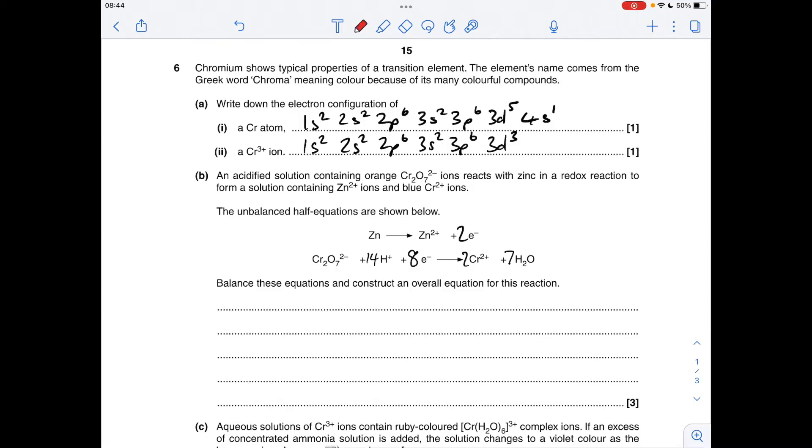So when we combine the two half equations to get the full redox reaction, we need the electrons to disappear. So basically, we need to multiply this first equation by 4. That'll give us eight electrons on the right. We've already got eight electrons on the left of the other half equation, so they will cancel when we add them together. So the overall redox reaction looks like that.